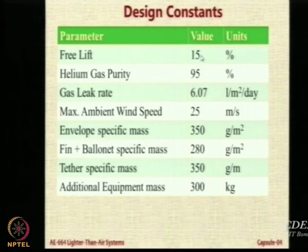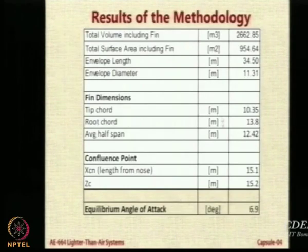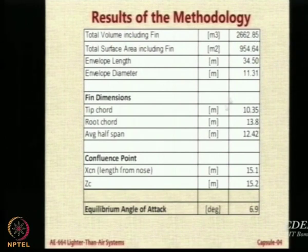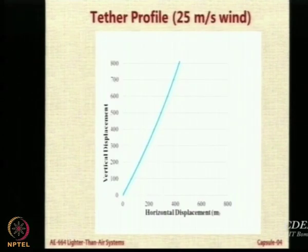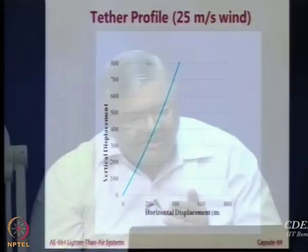We gave constant parameters: free lift, gas purity, gas leak rate, maximum speed, envelope mass, fin mass, tether mass, and additional mass — and we got the output. The envelope was 2662 cubic meters and the angle at which it trimmed was around 7 degrees. At around 7 degrees the aerostat is automatically trimmed. This is the profile — the aerostat is deployed at a height of 100 meters but because of heavy wind at 25 meters per second it has a significant blow-by, going much further behind, which you cannot avoid.